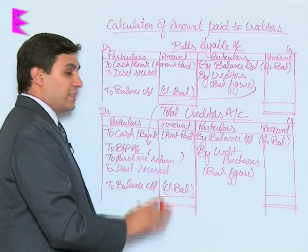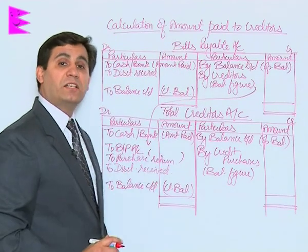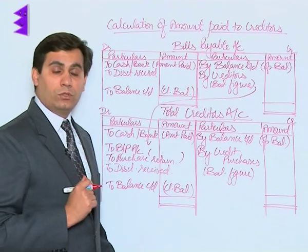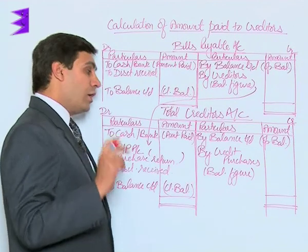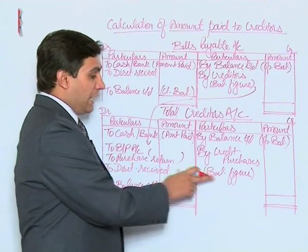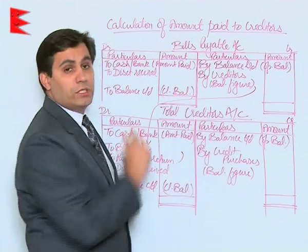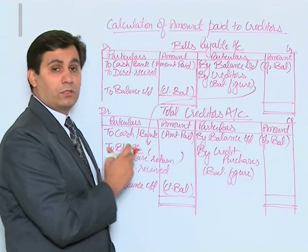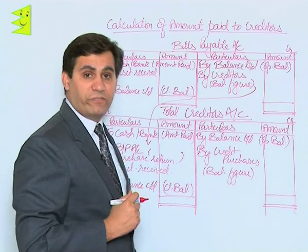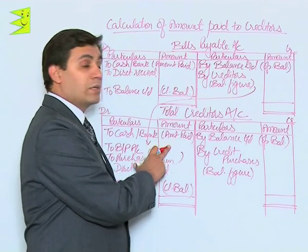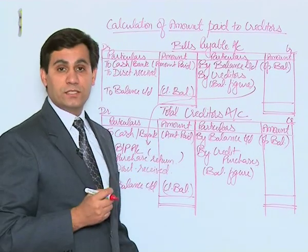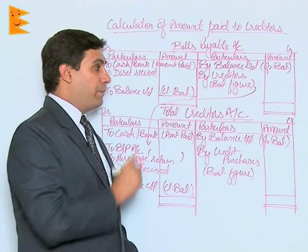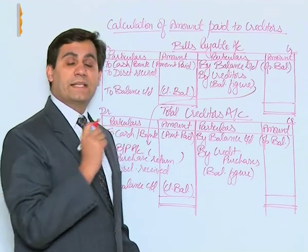Now, this credit purchases figure can be subtracted from total purchases, if given in the question, to calculate cash purchases. Alternatively, if credit purchases are already given in the question, then cash or bank will normally be the balancing figure, and this cash represents the amount paid to creditors during the year. Let us understand this point by working through the following example.